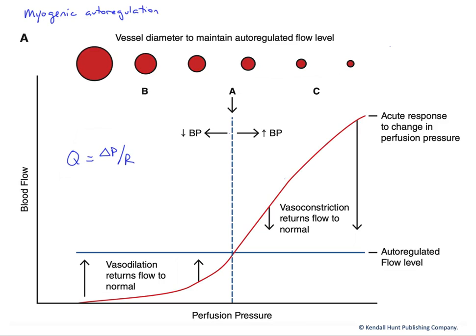In this graph, we want to look at myogenic autoregulation — in other words, how micro vessels respond to changes in the perfusion pressure to maintain normal flow to a particular tissue. We're going to graph blood flow through a vessel relative to the perfusion pressure driving flow through that vessel.